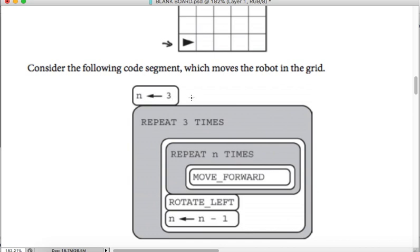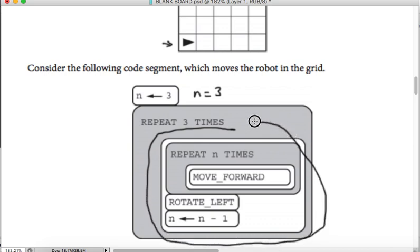Right here it says n equals 3. This is the initial value of n. We have to repeat three times this whole area. Inside, we repeat n times: move forward and then rotate left. Then n equals n minus 1.